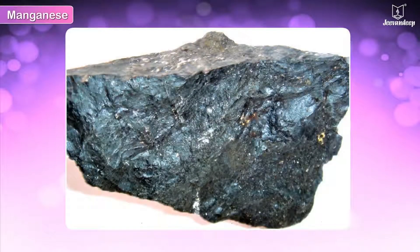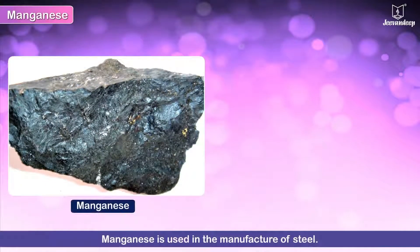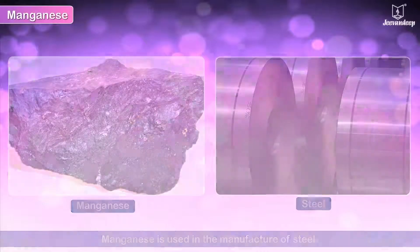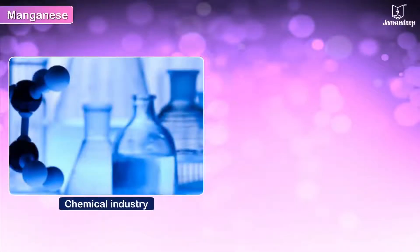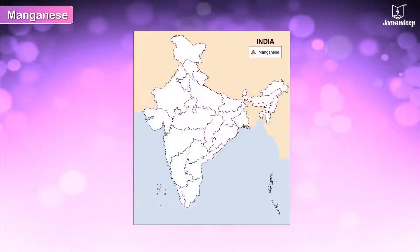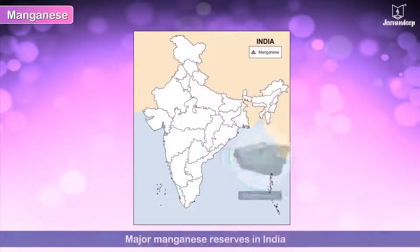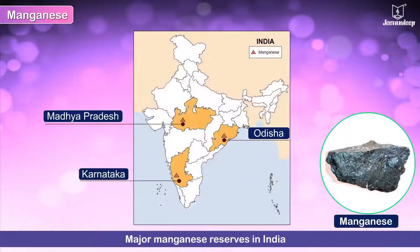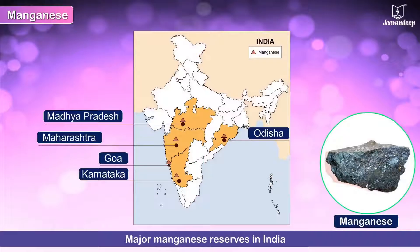Manganese is used in the manufacture of steel. It is also used in chemicals and glass industries. India has many deposits of manganese in Odisha, Karnataka, Madhya Pradesh, Goa, and Maharashtra.